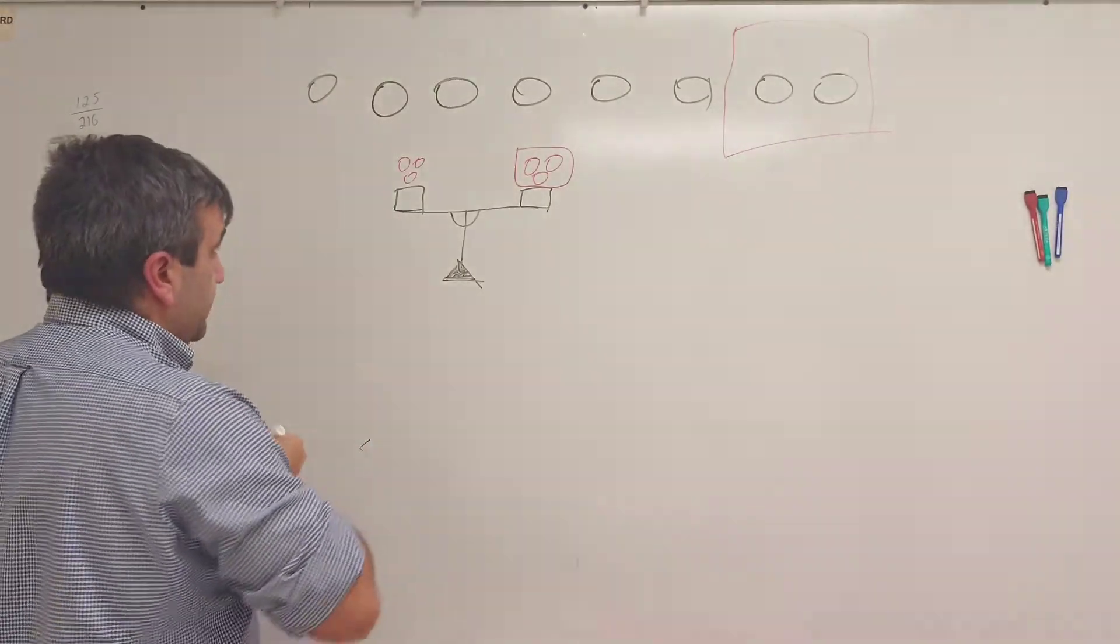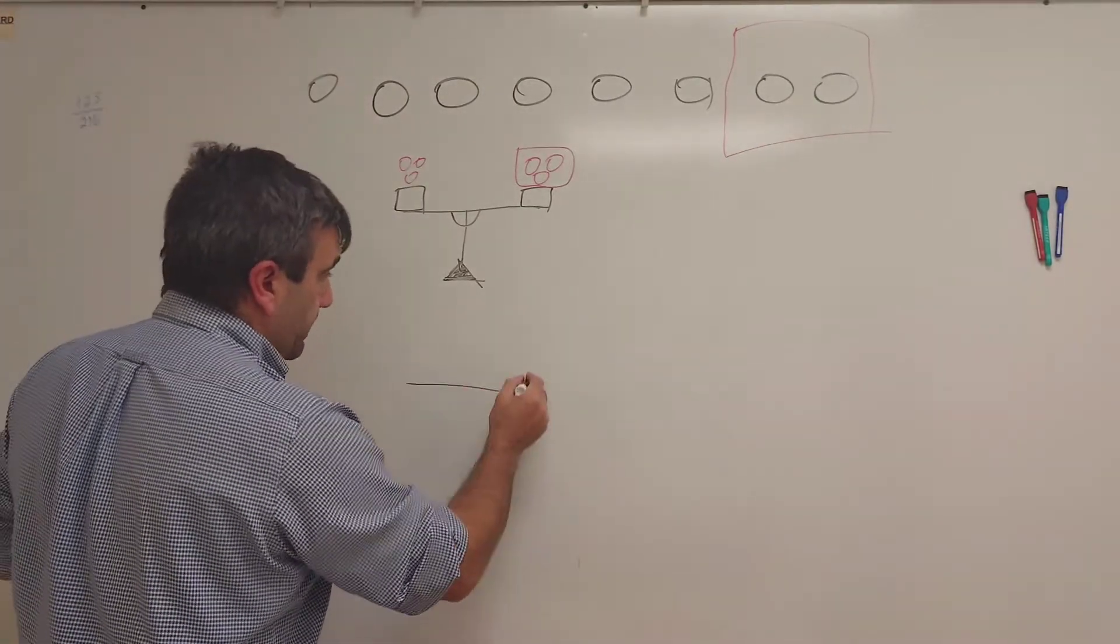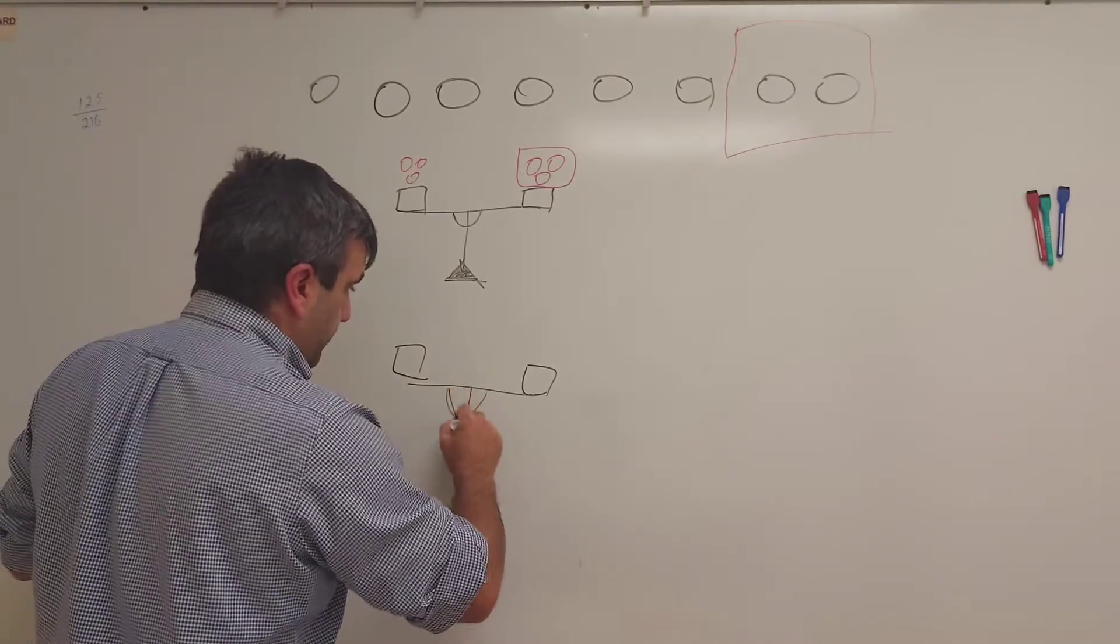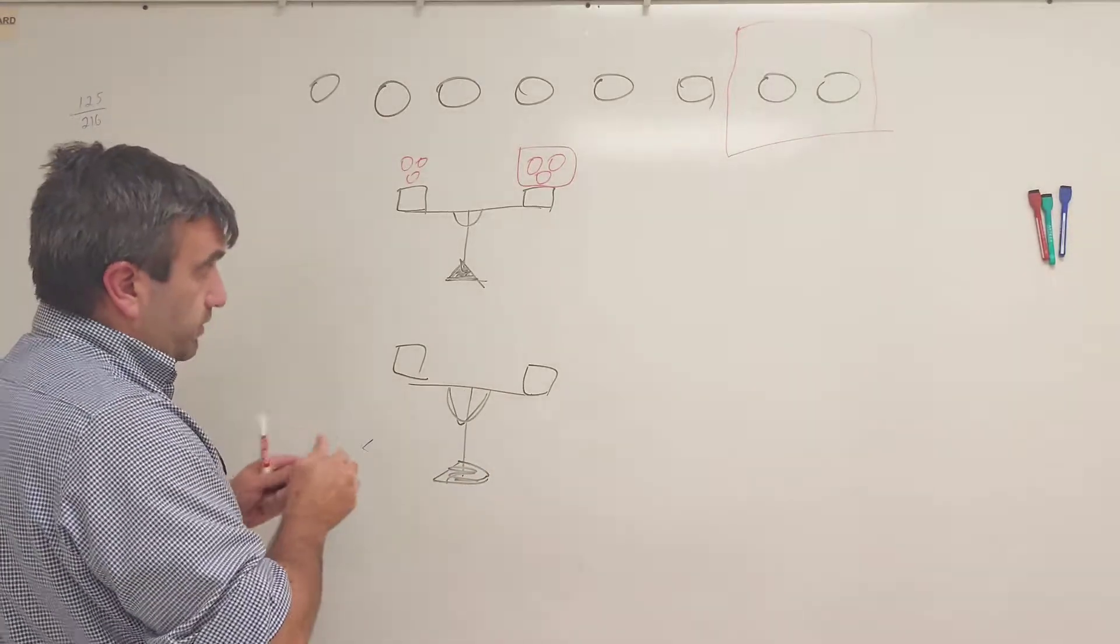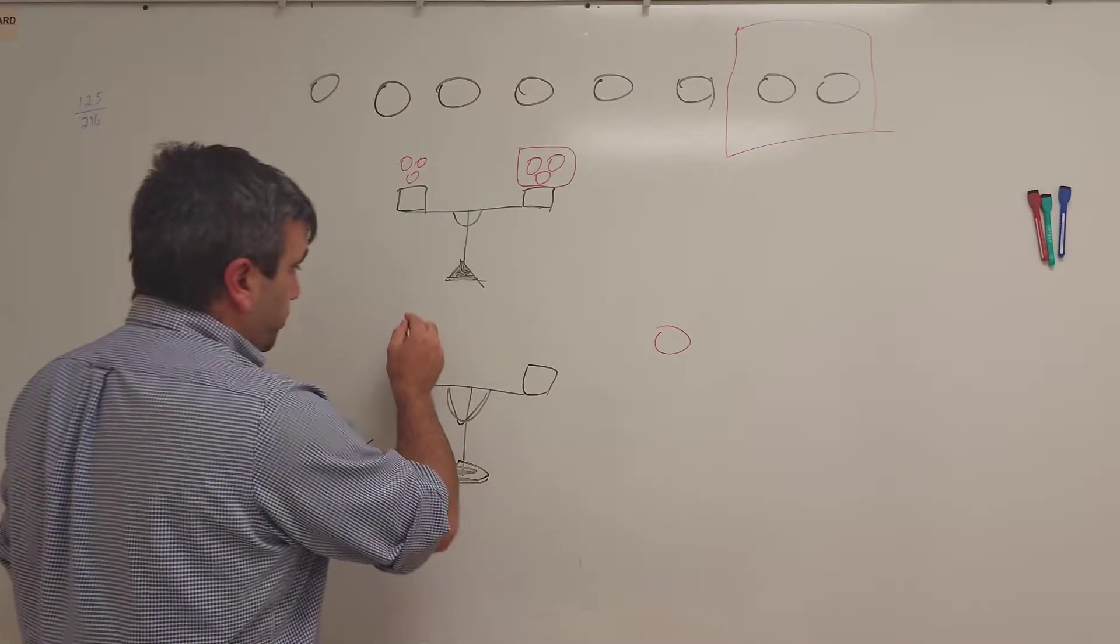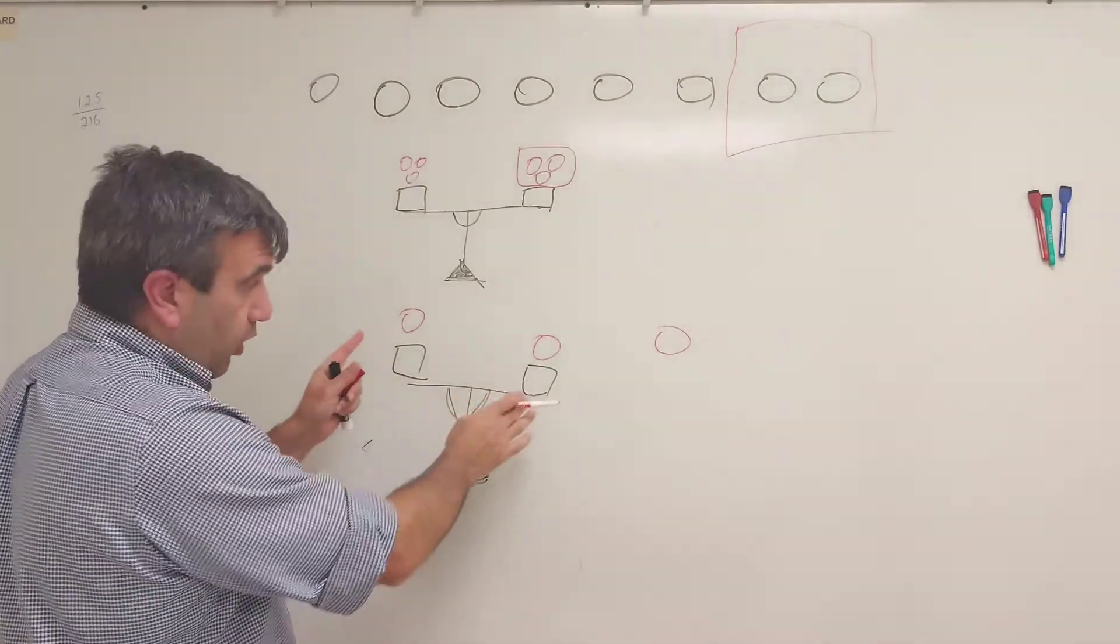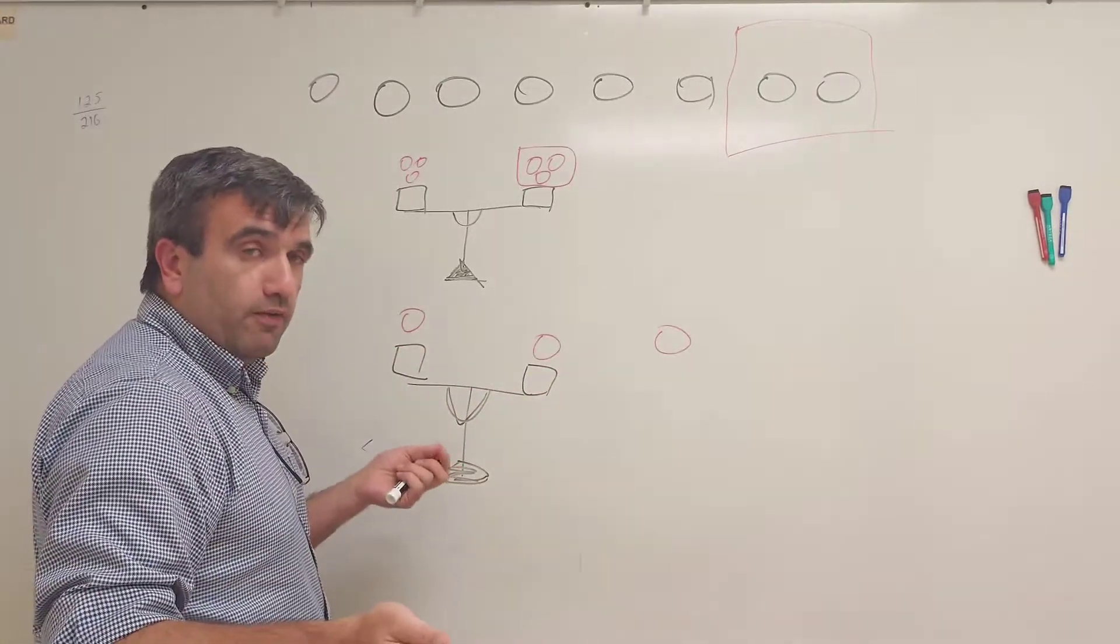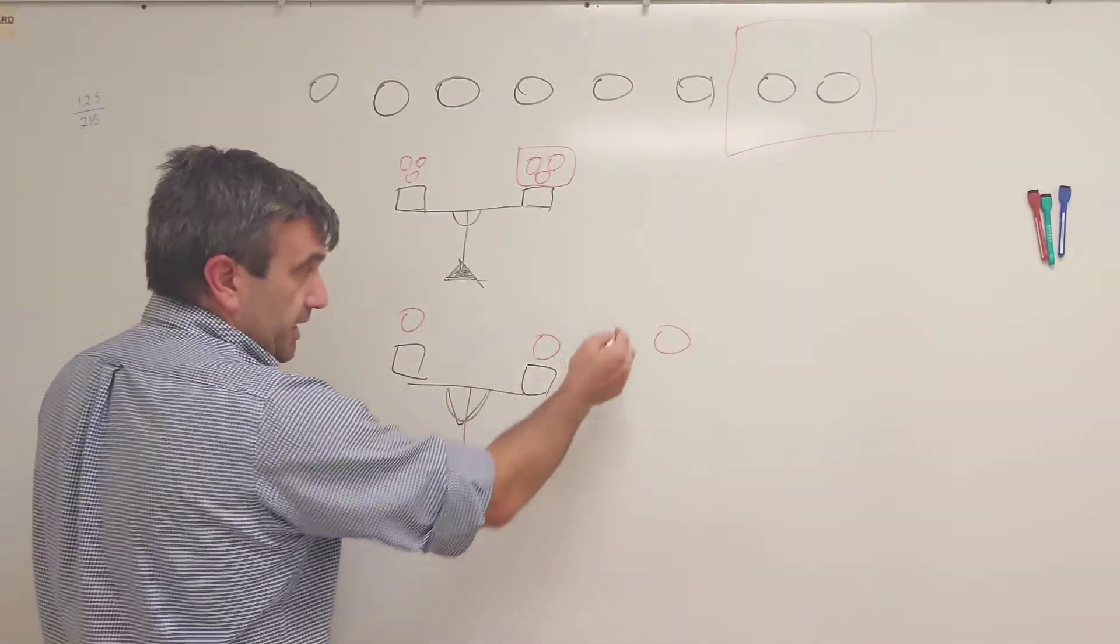Now we're going to do the second measurement. We're going to put one coin aside and put one coin here, one coin here. If Bitcoin is one of these two, then we found our fake coin in two measurements.